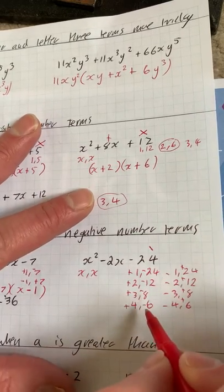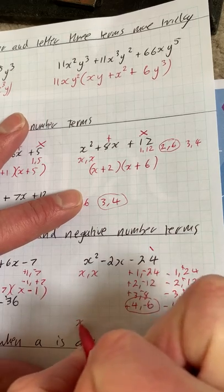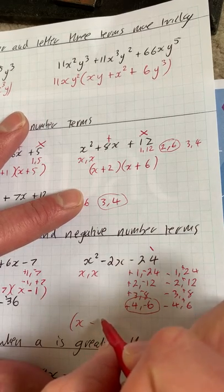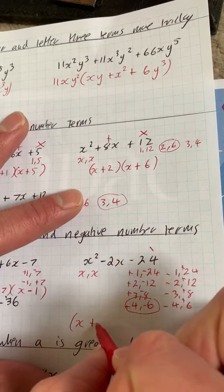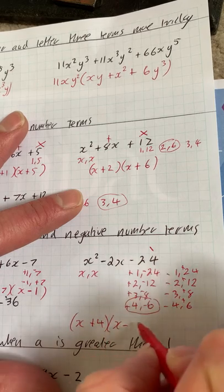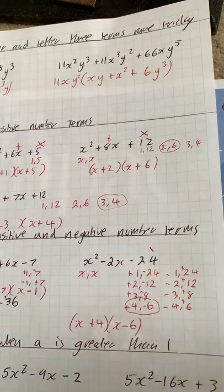Now it doesn't matter which bracket you put it in, as long as you get the right sign in front of the number. So I'm going to put plus 4 first and then minus 6 second.